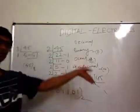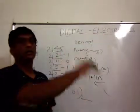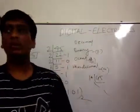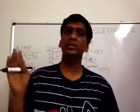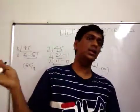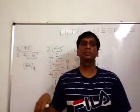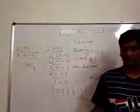Write down the remainders to the right and go from bottom to top, making the bottom-most remainder the most significant bit.